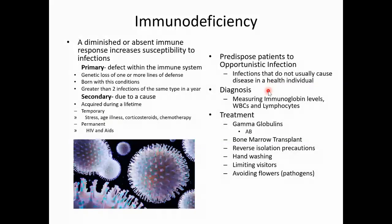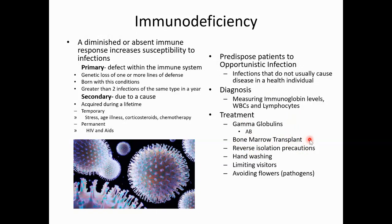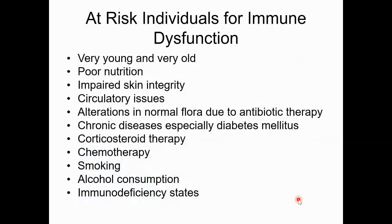Diagnosis involves measuring immunoglobulin levels, white blood cells, and lymphocytes. Treatment may include antibody injections like IgG and IgM, or a bone marrow transplant to increase white blood cells. Reverse isolation precautions protect the patient from others since their immunity is low. Hand washing, limiting visitors, and avoiding flowers — which carry pathogens — are all important measures.